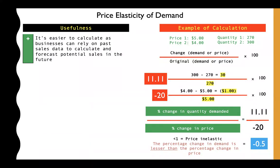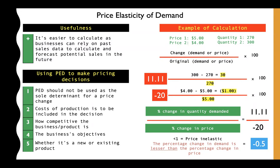PED is useful for businesses — use past sales data to see how demand was affected by previous pricing, and forecast potential future sales. However, price should not be the sole determinant. Businesses must also consider production costs, competitors, business objectives, and whether it's a new or existing product — for example, using penetration pricing at introduction. PED is a guide for forecasting, not a sole basis for pricing decisions.